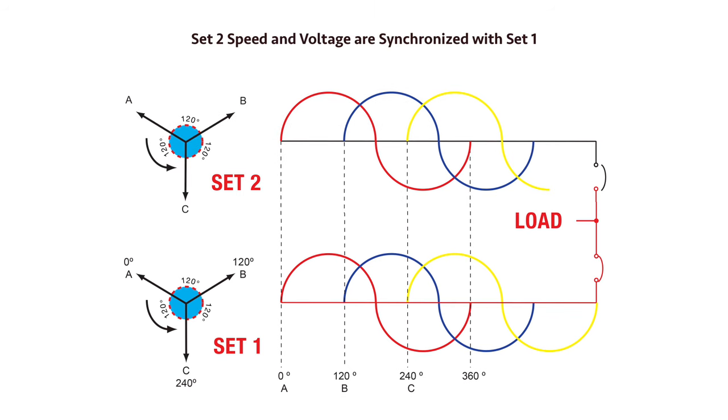Paralleling controls start synchronizing set two's voltage and frequency with that of set one. Set two is now synchronized with set one and AC voltages are now in phase with each other.